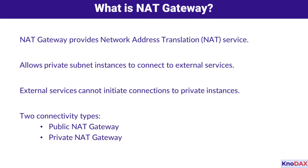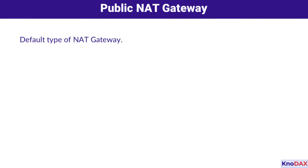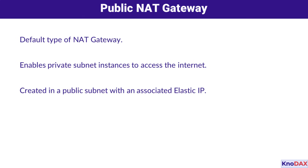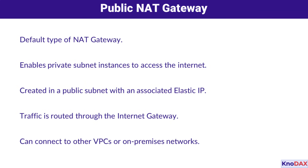There are two types: public and private NAT gateways. First up, we have the public NAT gateway. This is the default type, and is used to enable private subnet instances to access the Internet. The NAT gateway is created in a public subnet and is associated with an Elastic IP. Any traffic from private subnets flows through the Internet gateway via this NAT gateway. It can also connect your private subnets to other VPCs or on-premises networks.